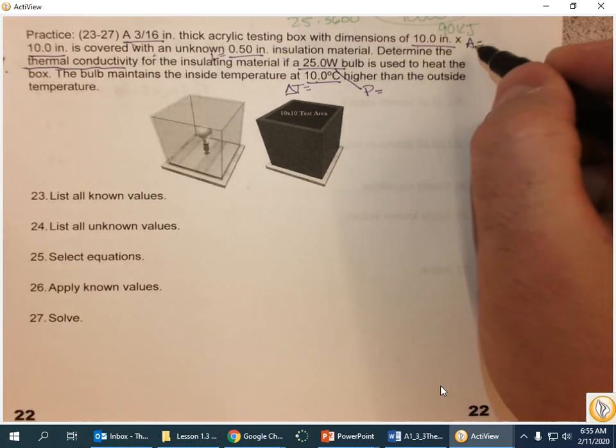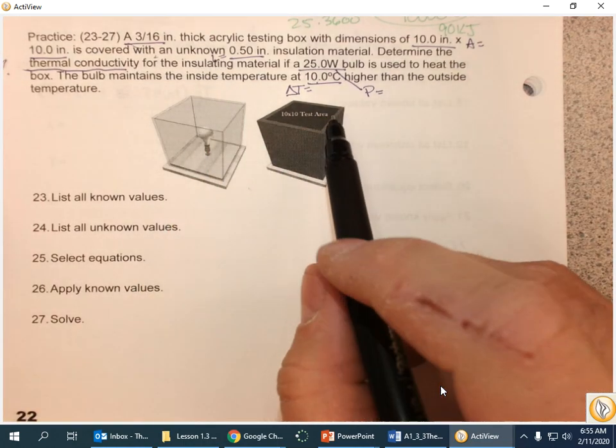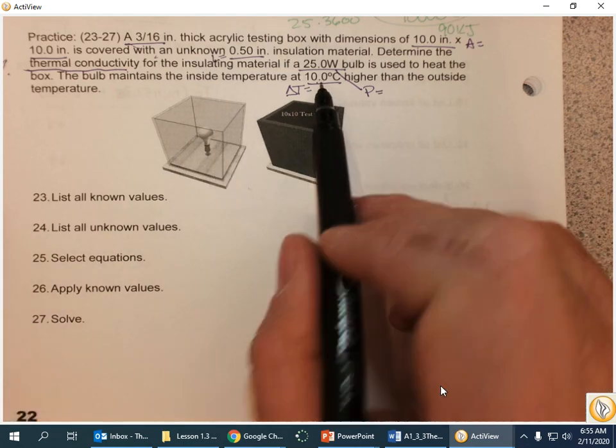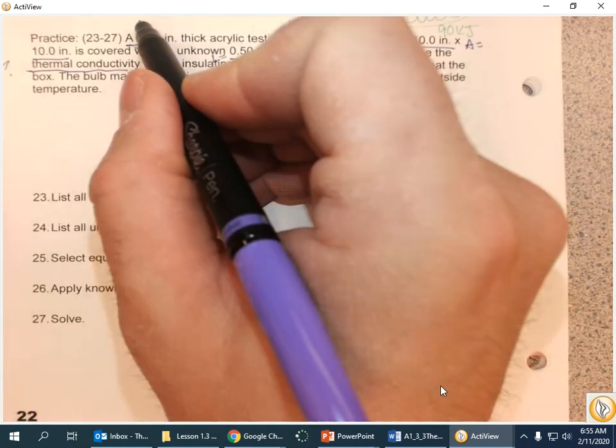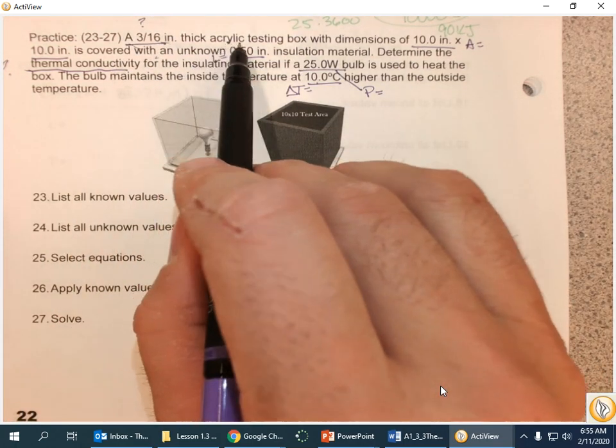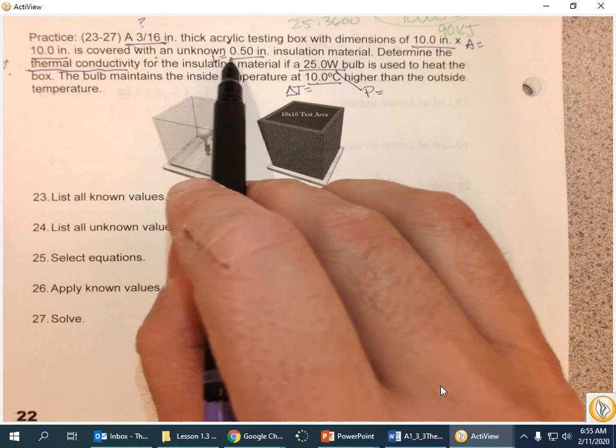So just going through that, I've got area. I've got L for thickness. I've got P for power. I've got a difference in temperature. I'm not really sure what that is, because that also could be L. The testing box versus the material.